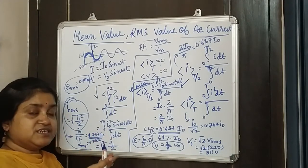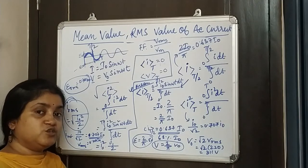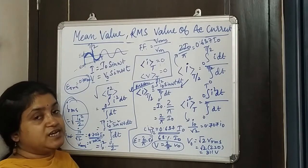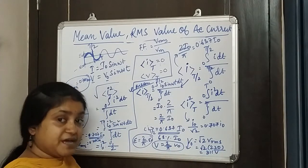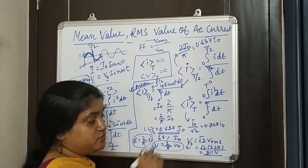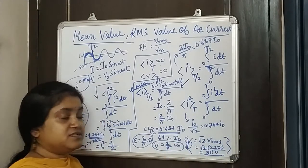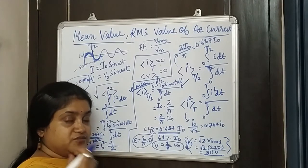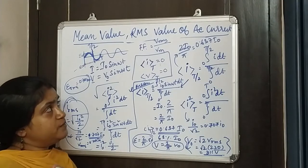The RMS value is also called the virtual value of current or voltage. Now, as we know, the V_RMS of our day-to-day appliances is generally 220 volts. From this we can find the maximum voltage: V₀ = √2 × 220 = 311 volts. So it is interesting to know that in our daily appliances, the maximum voltage actually reaches 311 volts.